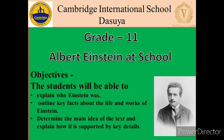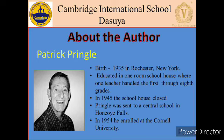Now, after the quick recap, let's move to the topic Albert Einstein at School. The main objectives of the chapter are: students will be able to explain who Einstein was, outline key facts about the life and works of Albert Einstein, and determine the main idea of the text and explain how it is supported by key details.